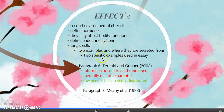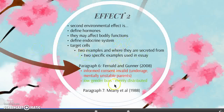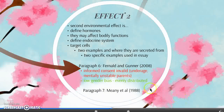Then you talk about the hormones and what they are secreted by. Examples of hormones produced by the body are adrenaline and cortisol from the adrenal glands, melatonin from the pineal gland, oxytocin from the pituitary gland and hypothalamus, and testosterone and estrogen from the gonads. You then elaborate and mention the two specific studies supporting effect number two: Fernod and Gunner 2008, which investigates the hormone cortisol, and Meany et al. 1988, which investigates glucocorticoids.